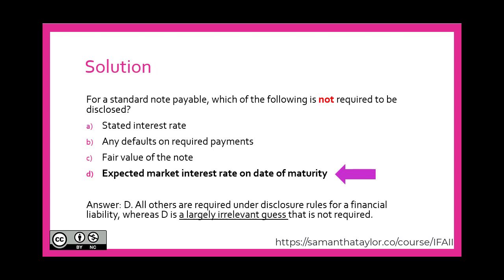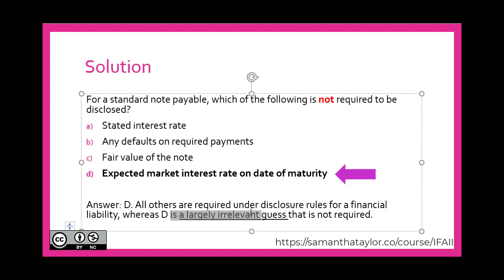If you said D — expected market interest rate on the date of maturity — you would be correct. The hint is that if it gives the user insights on the current economic reality when these financial statements are being produced, then it will likely be relevant. But do you have a crystal ball? Do you know what the expected market interest rate would be on the date of maturity? We are not expected to reflect the anticipated expected market interest rate on the date of maturity. That is not required. We need to let them know the current stated interest rate, any defaults, and the fair value of the note in today's dollars — not a largely irrelevant guess.